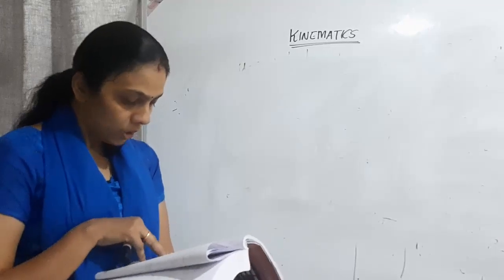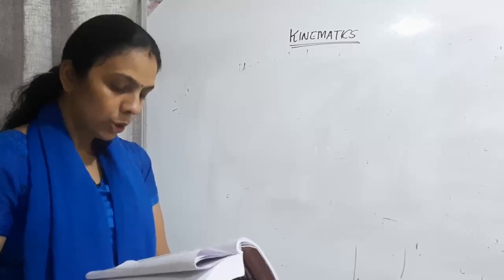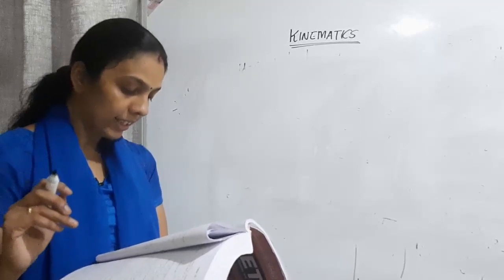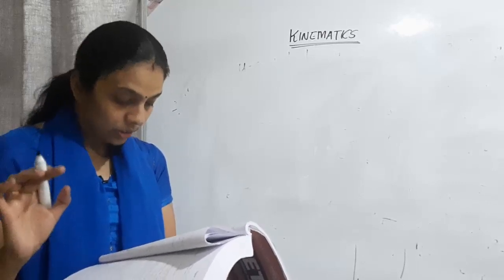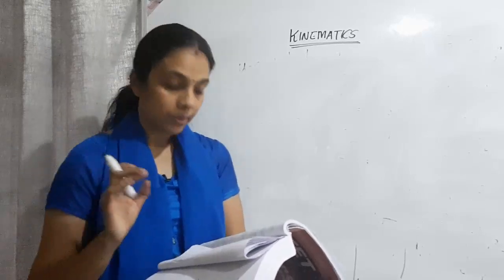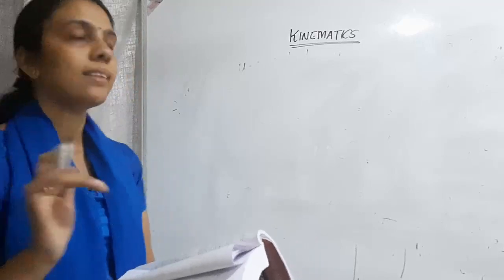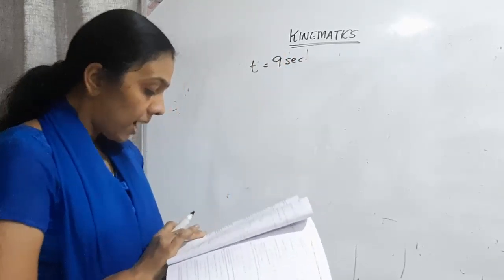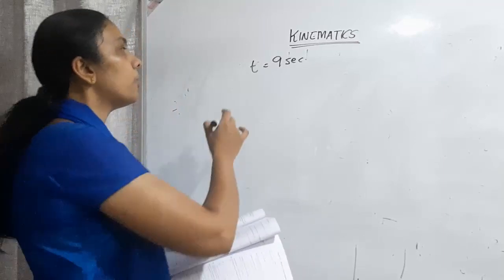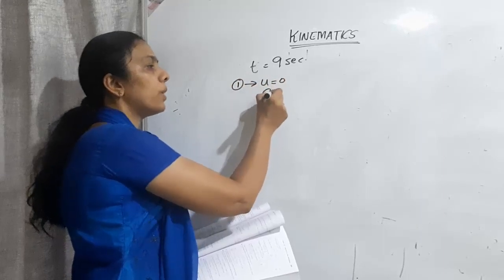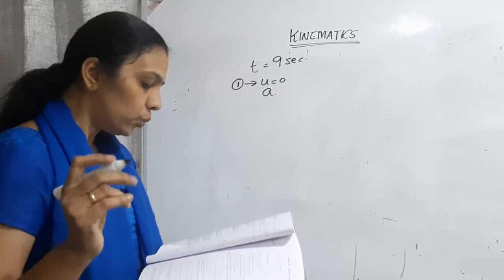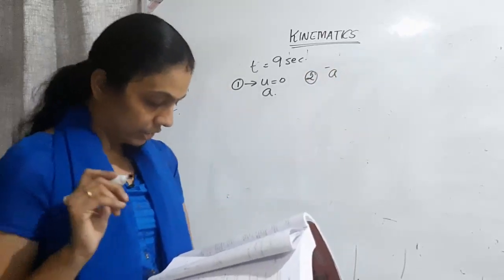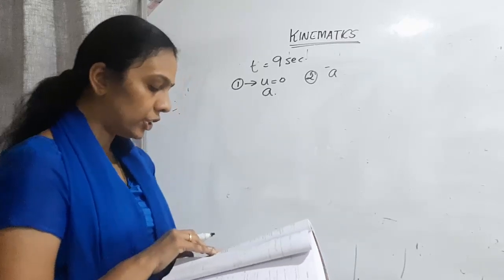Next question: a body moves for a total of 9 seconds, starting from rest with uniform acceleration, then with uniform retardation which is twice the value of acceleration, and then stops. Find the duration of uniform acceleration. Total time = 9 s; first phase uses acceleration a; second phase uses retardation 2a.